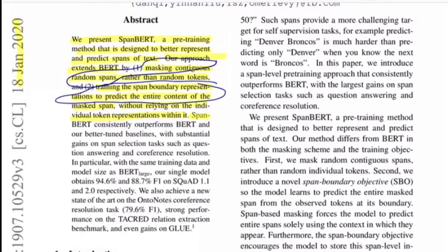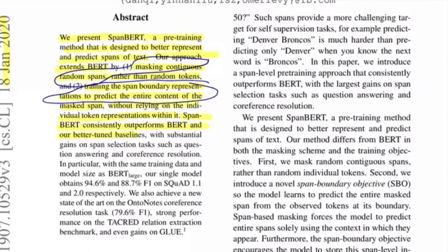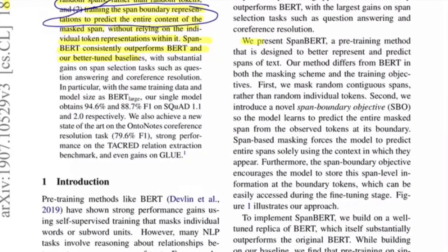SpanBERT is a pre-training method designed to better represent and predict spans of text. Their method differs from BERT in both the masking scheme and the training objectives. BERT randomly masks tokens in a sequence, whereas this paper masks random contiguous spans rather than individual tokens, and also introduces a different training objective.